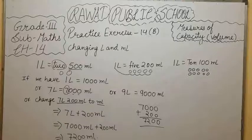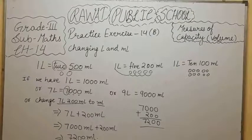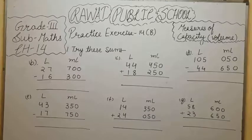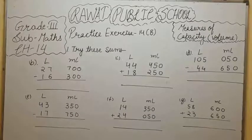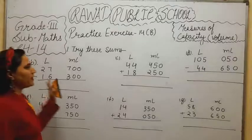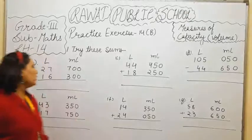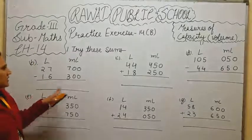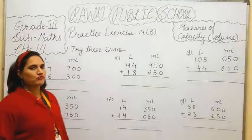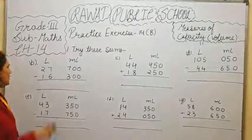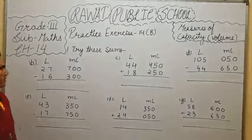Question number 1. Now, we are going to solve these questions. 14B exercise. Try these sums. Question number A is already done by book for you all. So, we are going to solve question number B, C, D, E, F, G, H. You have to do by your own later on. We will solve question number B first.